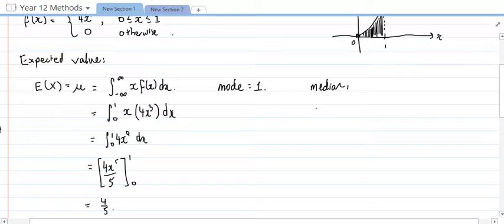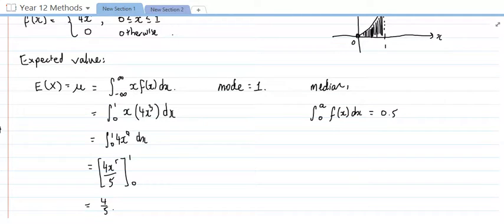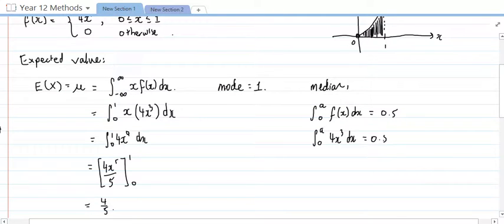So what I'm going to do is the integral between 0 and some value, I'll call it A, of our curve, f(x) dx. And I know that that must be equal to 0.5. So what I can say here is that the integral between 0 and A of, what was it again, 4x cubed, is equal to 0.5.